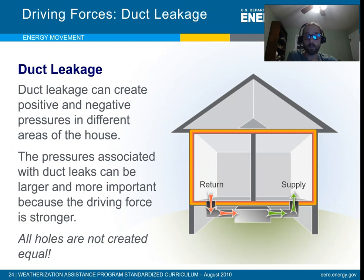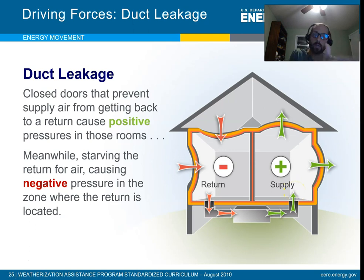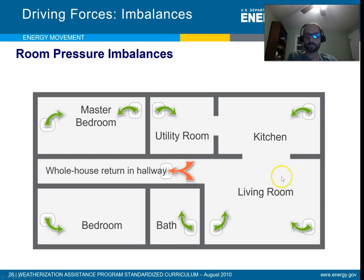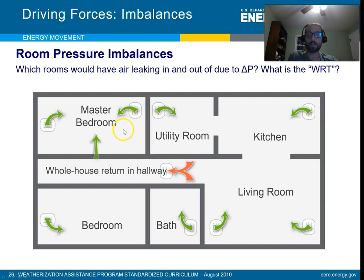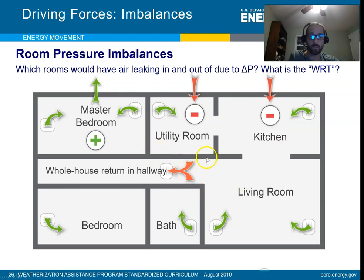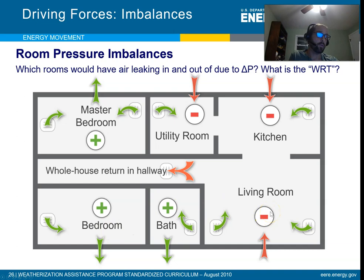Unbalanced ducts can also cause pressure differences. If you have two rooms — supply in one and return in the other — you'll have a positive pressure zone where the supply is and a negative zone where the return is. Ideally, every room should have both a supply and a return, which is something to look for in energy audits. Older buildings with one return vent for the whole floor create positive pressure zones in rooms with only supply and negative zones throughout the rest of the building, causing air to leak in and out.